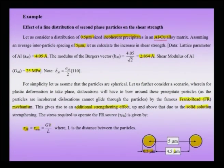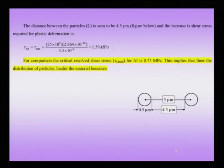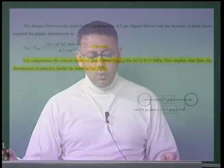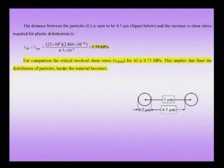The stress required to operate a Frank-Reed source is given by τ_Frank-Reed, which is the maximum stress required to operate a Frank-Reed mechanism. The formula is τ_max = GB/L, where G is the shear modulus, B is the Burgers vector, and L is the distance between the particles — 4.5 microns. Plugging in the parameters, τ_max turns out to be about 1.59 MPa.